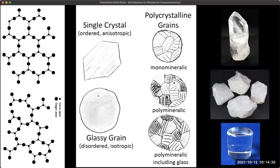We can also have polycrystalline material — lots of small crystal grains agglomerated together with interfaces between them, sometimes called white quartz, still just one mineral but randomly oriented crystals. And you can have something polymineralic with more than one mineral, like granite, possibly with glass pieces mixed in. All these situations may need to be considered when looking at dust in space.